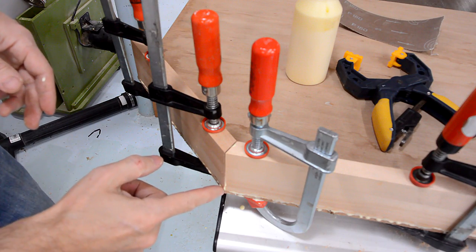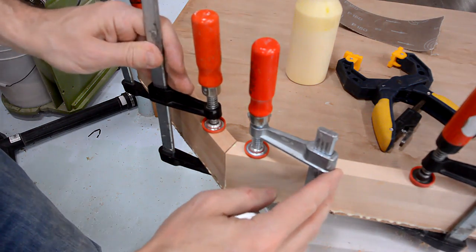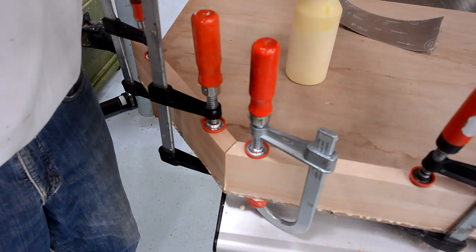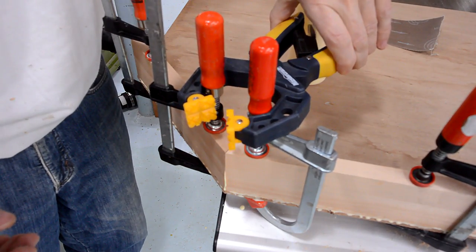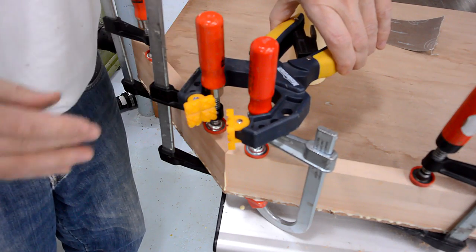I keep running into this problem where the joint is closed on the bottom, but on the top, it's open. But, I just realized if I put a clamp between the clamps, I can close that up.